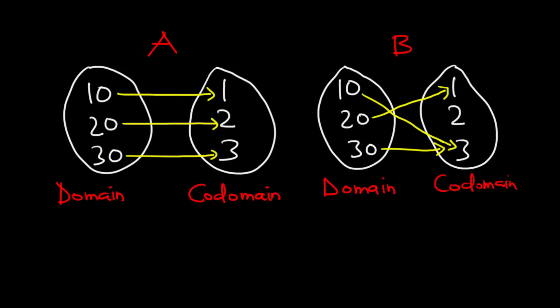A function is said to be one-to-one if different elements in the domain have distinct values in the codomain. Let's consider these two diagrams. For diagram A, we realize that 10 maps to 1, 20 maps to 2, and 30 maps to 3.